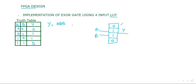When input A and B is 00, this first line will be selected. When it is 01, the second line will come to output. When it is 10, the third line will come to output, and when it is 11, the fourth line will come to output.